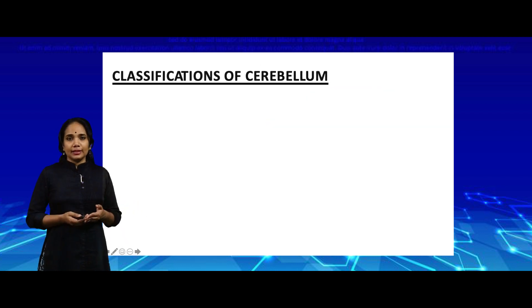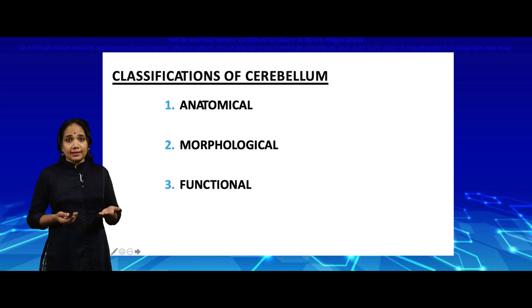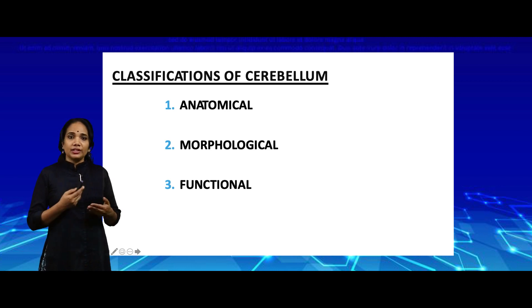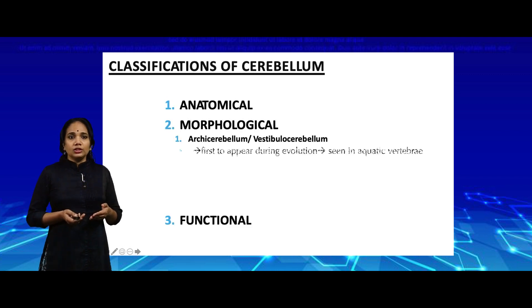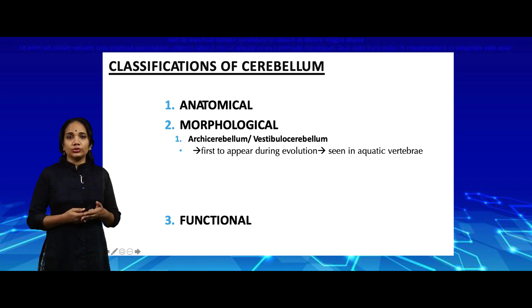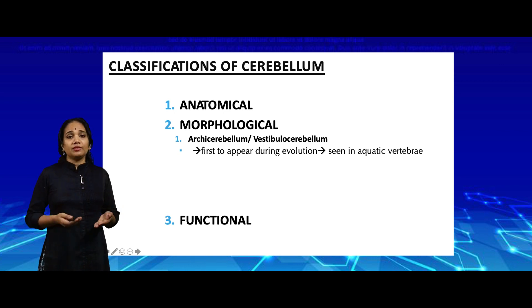How can we classify the cerebellum? The cerebellum can be classified in three ways: anatomical, morphological, and functional classification. For the anatomical classification, please check my previous video where we divided the cerebellum into lobules of the vermis and lateral hemispheres. Morphologically, it is useful to think evolutionarily. The archicerebellum is the first cerebellum to develop and is also called the vestibular cerebellum. It is seen in aquatic vertebrates, where balance in water is essential.